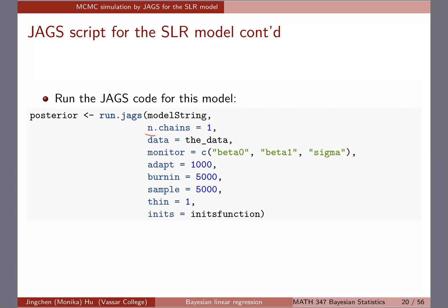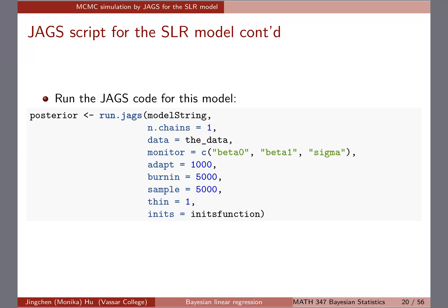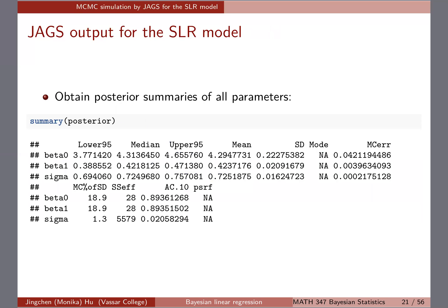You run JAX using the run_jags function. For simplicity we're doing one chain. We have three parameters — beta_0, beta_1, and sigma — so we monitor all of them. We're doing 1,000 adapt, 5,000 burn-in, and 5,000 samples to start. You can always start with one chain and later check autocorrelation to determine if you need more.